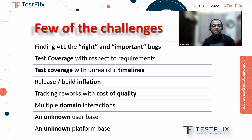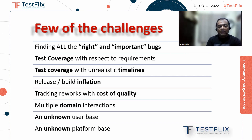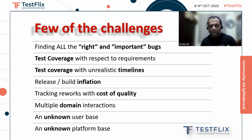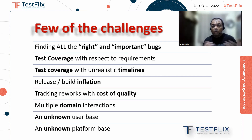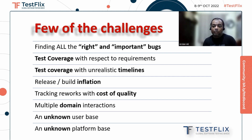There are special kinds of challenges: finding all the right and important bugs, test coverage with respect to requirements — which we all know are ambiguous at one time or another — test coverage with unrealistic timelines, release build inflation, and once the release goes out to the client there are always issues tracking back to QA and the development team. Then there's cost of quality, multiple domain interaction, an unknown user base, and unknown platform base. There are so many challenges, and our system with all its complexities existing within that phase space comes with these challenges.